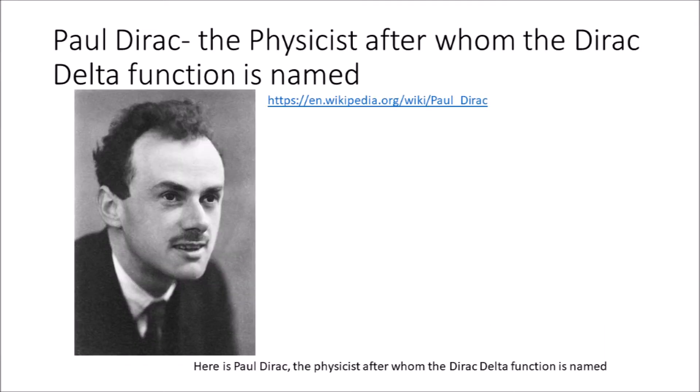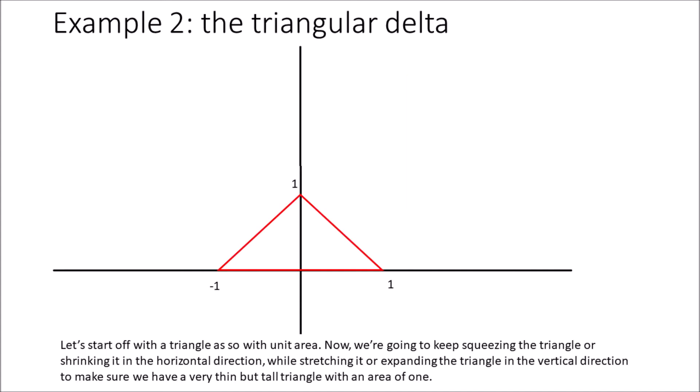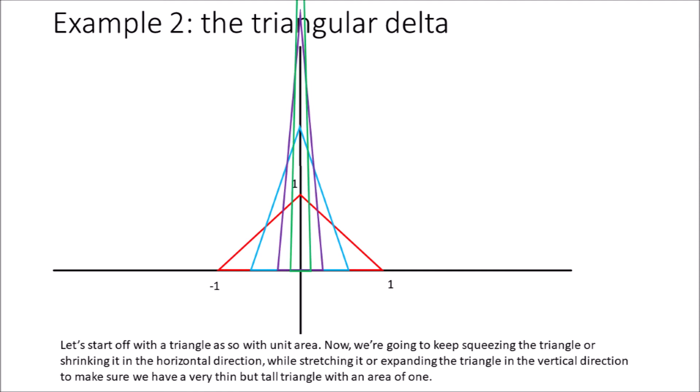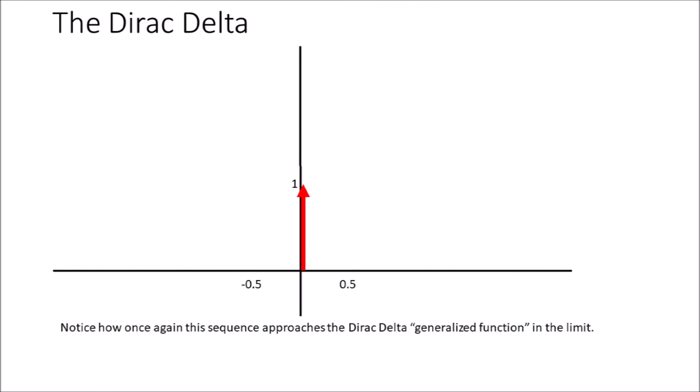Here is Paul Dirac, the physicist after whom the Dirac delta function is named. Let's start off with a triangle with unit area. Now we're going to keep squeezing the triangle, shrinking it in the horizontal direction while stretching it in the vertical direction, to maintain a very thin but tall triangle with an area of 1. Notice how once again this sequence approaches the Dirac delta generalized function in the limit.